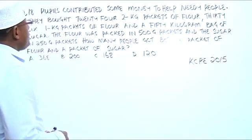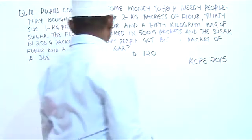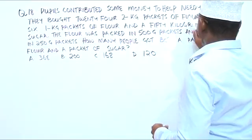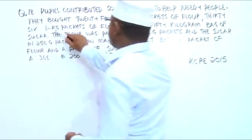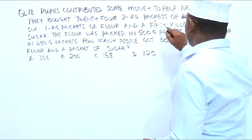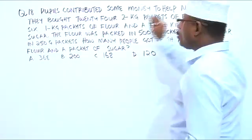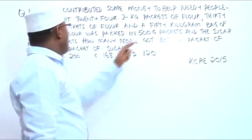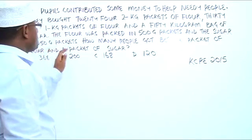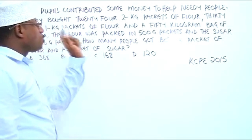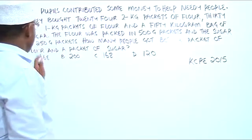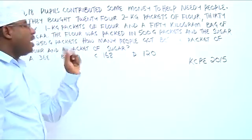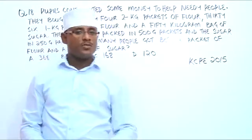Pupils contributed some money to help needy people. They bought 24 2-kilogram packets of flour, 36 1-kilogram packets of flour, and a 50-kilogram bag of sugar. The flour was packed in 500-gram packets and the sugar in 250-gram packets. How many people got both a packet of flour and a packet of sugar?